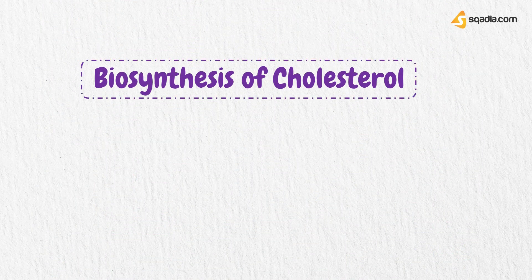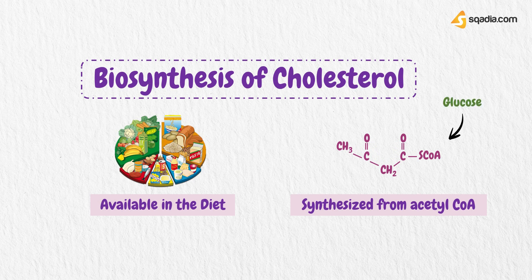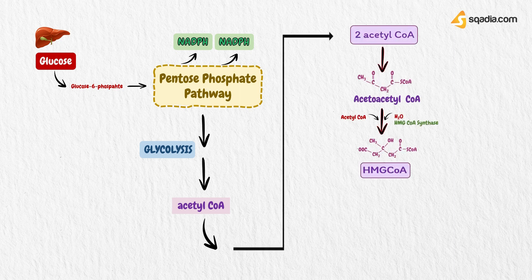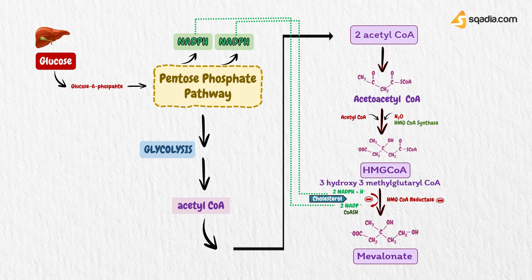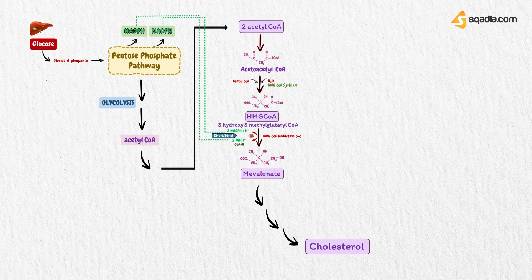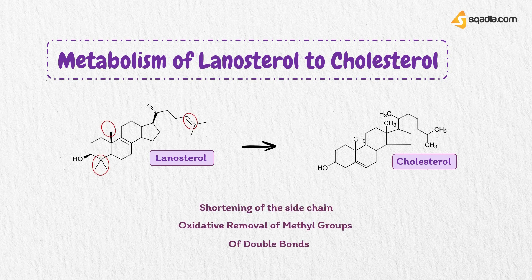Now let's learn the biosynthesis of cholesterol. Cholesterol is normally available in the diet, but it can also be synthesized from acetyl-CoA derived from glucose. Cholesterol is made in the liver from glucose via the pentose phosphate pathway, which generates NADPH, and glycolysis, which produces acetyl-CoA. Acetyl-CoA is then metabolized to 3-hydroxy-3-methylglutaryl-CoA (HMG-CoA), which is reduced by NADPH in the presence of HMG-CoA reductase — the regulatory enzyme for cholesterol synthesis — to form mevalonate. Mevalonate is then metabolized via more than two dozen intermediates to form cholesterol. The conversion of lanosterol to cholesterol is a multi-step process involving shortening of the side chain, oxidative removal of methyl groups, reduction of double bonds, and migration of a double bond.